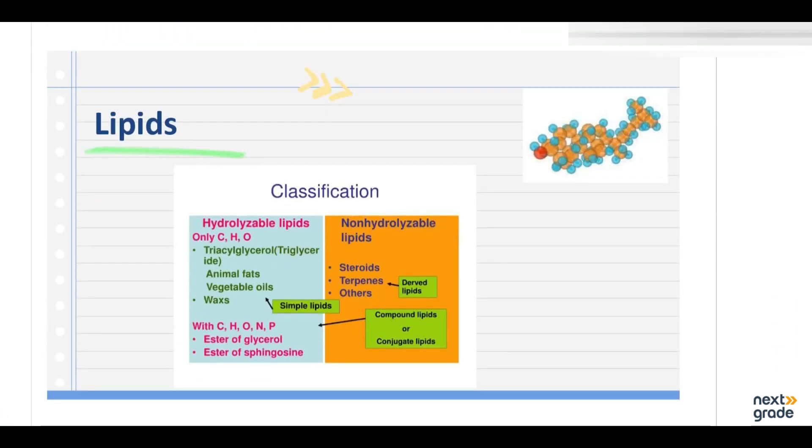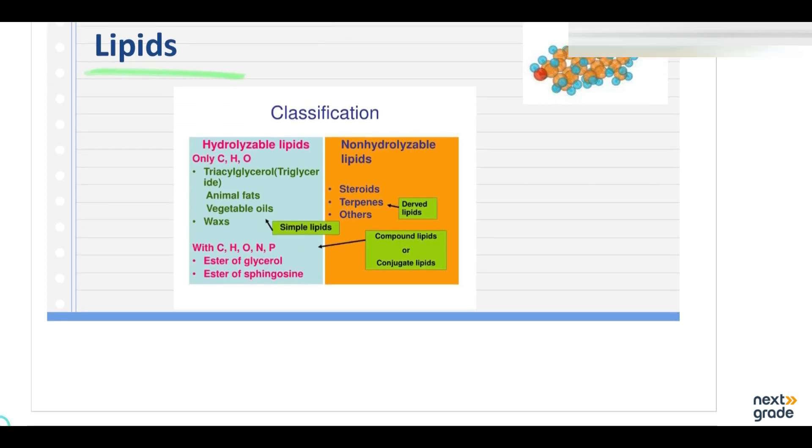As we are already done with the triglycerol, now we are left with waxes, with terpenes, and with another type of lipids, that is the phospholipids. So this is just a quick overview of the last classification that we have done. Now we will do the waxes.